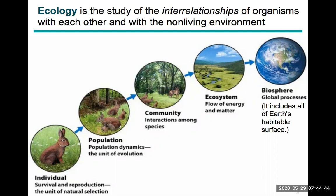Looking at this diagram, there are many different levels at which ecology can be examined. At the largest scale is our biosphere, which includes all habitable places on the surface of the earth. You can then reduce it by looking at various ecosystems that involve the flow of energy and matter, such as the water cycle, nitrogen cycle, and oxygen cycle.